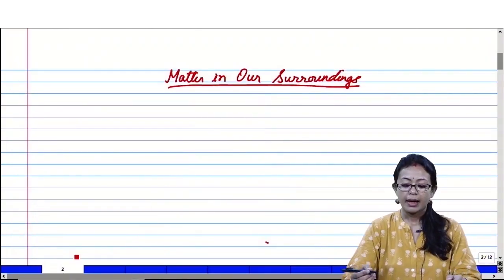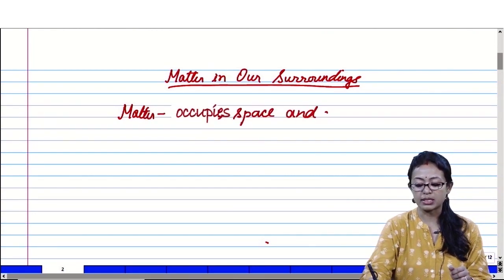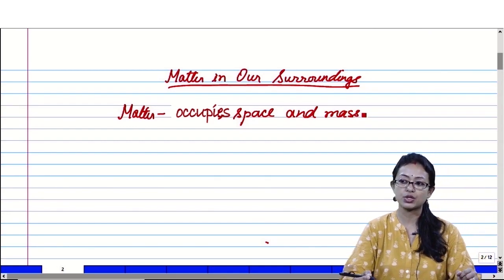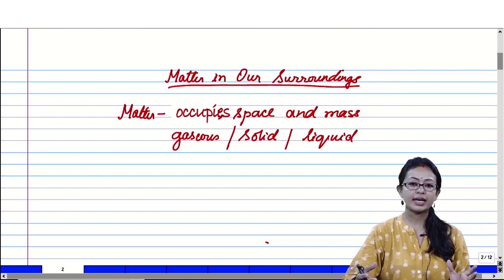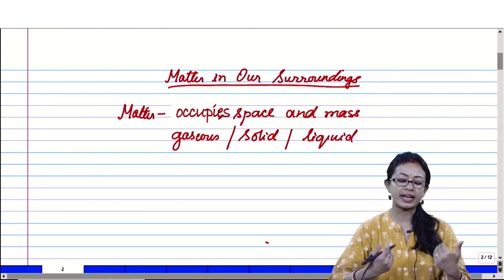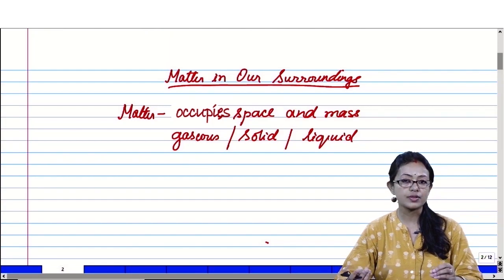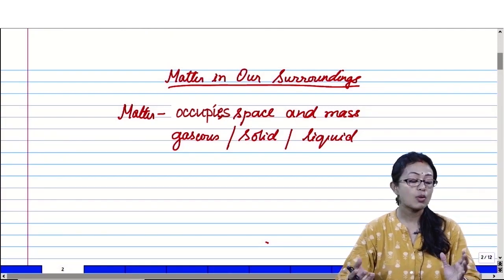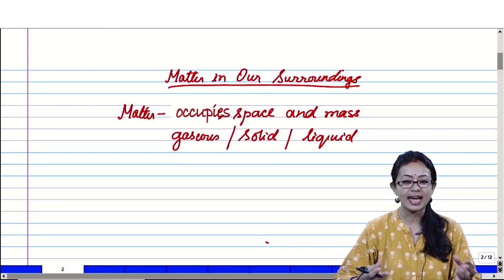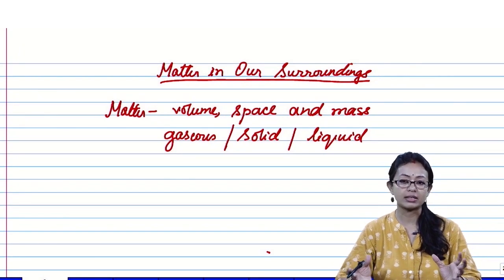Matter is something that occupies space and has mass — whether it is in the gaseous state, solid state, or liquid state. Right from the ancient period, there had been a lot of research work going on. Some scientists, philosophers, and thinkers thought that matter is made up of five elements: air, water, fire, earth, and sky. All these things mixed together composed matter — that was their thought.